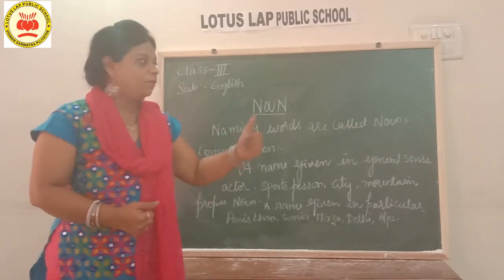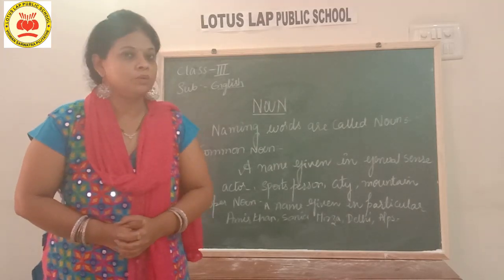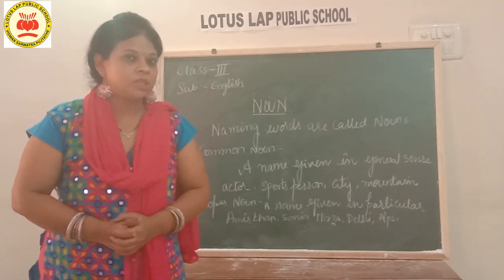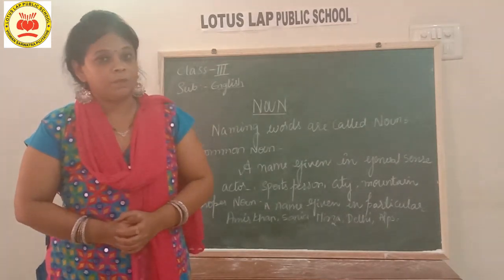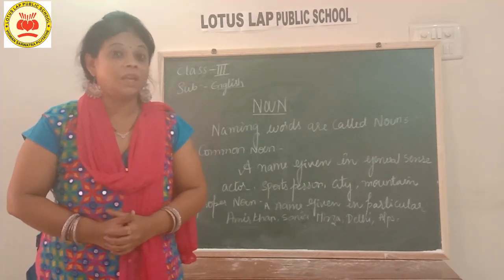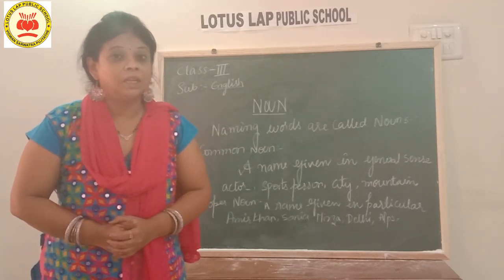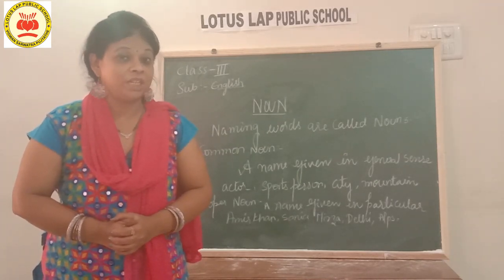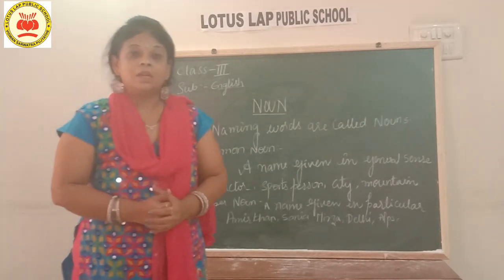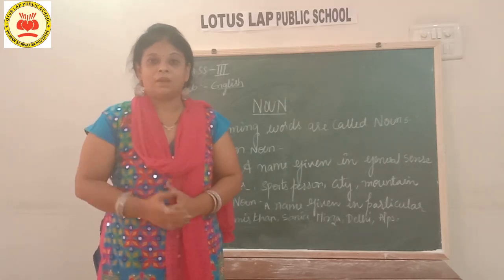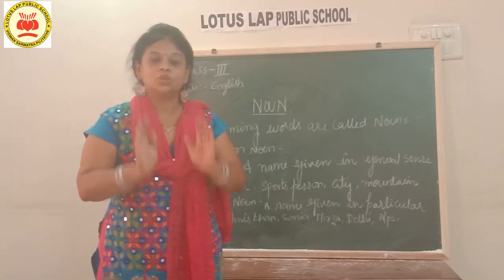In Class 3, we have a topic called noun. You know what is a noun? It is a name given to a person, a place, an animal, or a thing. A name given to a person, a place, an animal, or a thing. We play name, place, animal, thing — do you play? So in the same way, any name given to a person, a place, an animal, or thing refers to a noun.